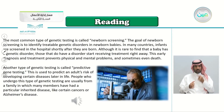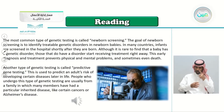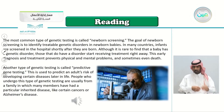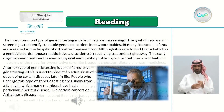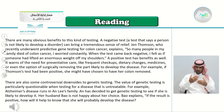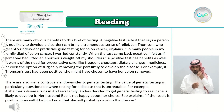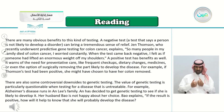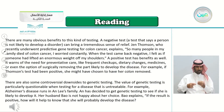Another type of genetic testing is called predictive gene testing. This is used to predict an adult's risk of developing certain diseases later in life. People who undergo this type of genetic testing are usually from a family in which many members have had a particular inherited disease, like certain cancers or Alzheimer's disease. There are many obvious benefits to this kind of testing. A negative test — a test that says a person is not likely to develop a disorder — can bring a tremendous sense of relief. Jen Thompson, who recently underwent predictive gene testing for colon cancer, explains: 'So many people in my family died of colon cancer, I worried constantly. When the test came back negative, I felt as if someone had lifted an enormous weight off my shoulders.'